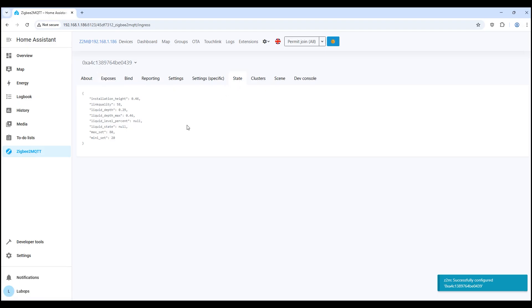On the state tab, we actually have data in json format, the way zigbee2mqtt sees it. Here's what's interesting here: Installation underscore height is the height from the sensor to the bottom of the tank, mine is set to 5 meters. Liquid underscore depth is the actual depth of the liquid, now almost 5 meters. That is, the tank is almost full. Liquid underscore depth underscore max is the maximum configured depth, also 5 meters so that the sensor knows the boundaries. Liquid underscore level underscore percent and liquid underscore state are empty for now. The filling percentage and level state will be here, but they are not active for me yet. Max underscore set and mini underscore set are the thresholds and percentages that I set up to receive notifications, mine are 80% and 20%. In short, here we see the purest information without any interfaces, exactly what the sensor sends to the network and with which home assistant can already work.